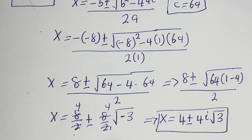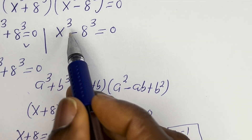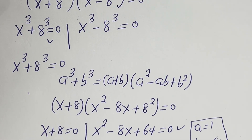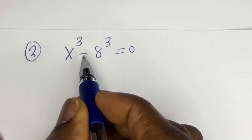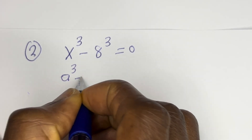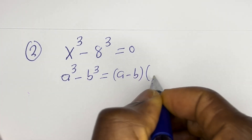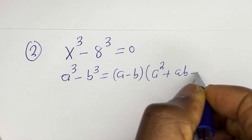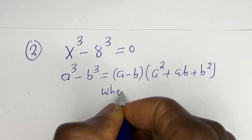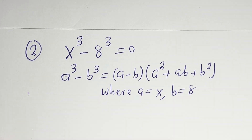Now let's consider the second case: s to the power of 3 minus 8 to the power of 3 is equal to 0. Take note that if you have a to the power of 3 minus b to the power of 3, this equals (a minus b)(a squared plus ab plus b squared), where a equals s and b equals 8.